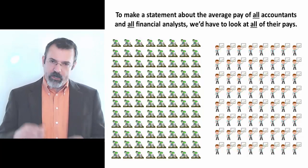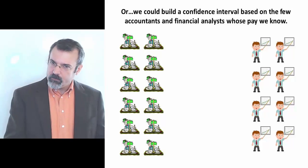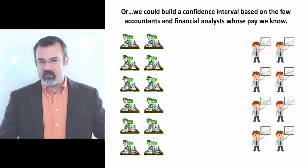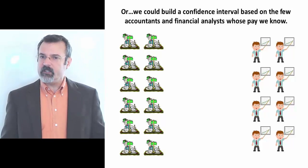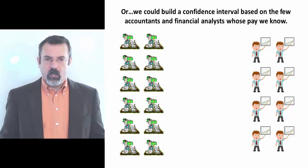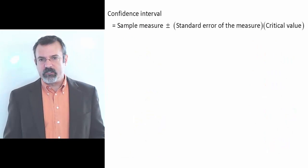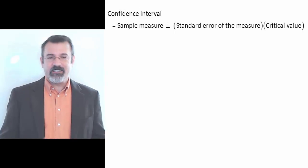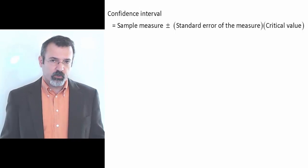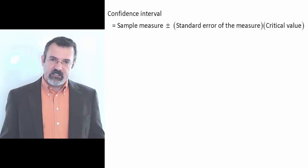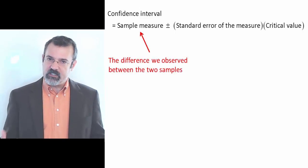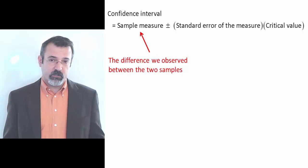Alternatively, we could take the sample of 12 accountants and eight financial analysts that we have, and construct a confidence interval based on the information we're observing in our small samples. A confidence interval is the sample measure plus or minus the standard error of the measure, multiplied by some critical value. In this case, the sample measure is the difference we observed in these two sample averages.